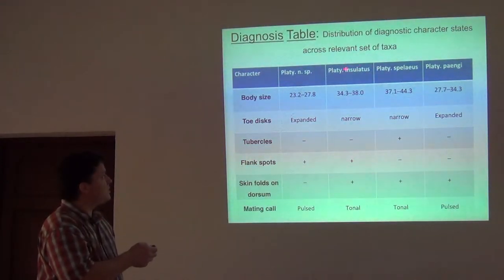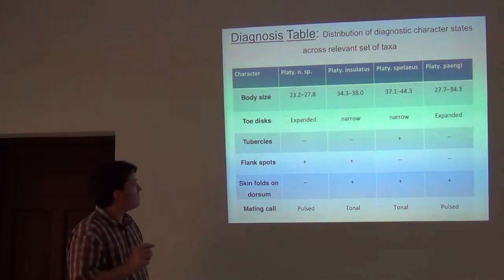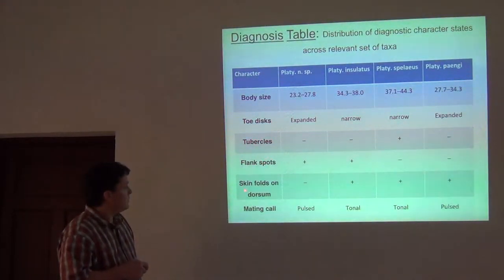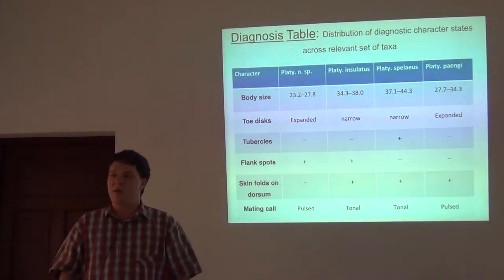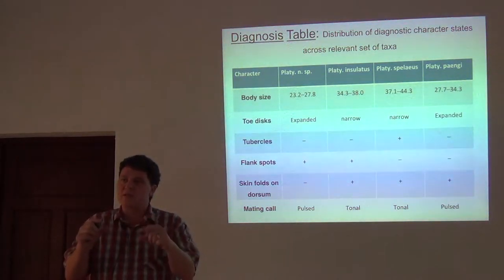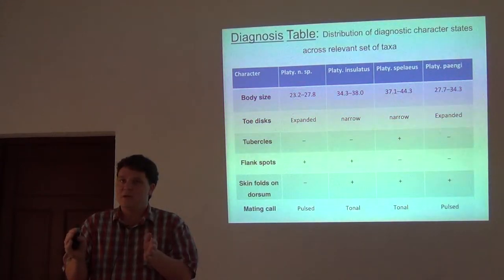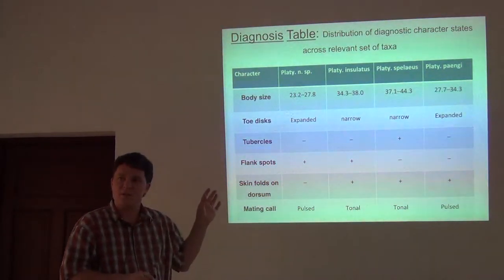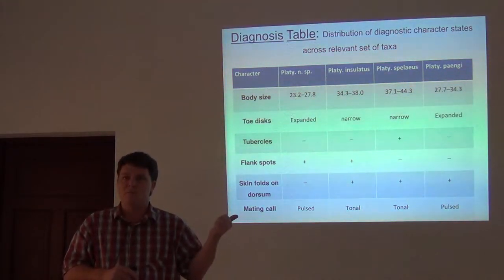These are frogs of the genus Platymantis, and we've summarized a couple different things: body size, the shape of the toe discs, tubercles, whether they have flank spots on the body, dorsal skin folds, and something about the mating call. The first step in writing a species description is coming up with this table, which has a figure legend that says 'distribution of diagnostic character states across the relevant taxa and the new species.' If you can show and summarize it all in a table like this, you can basically write the species description, the diagnosis, and the comparison sections around this table.